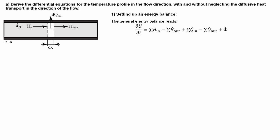But at the same time, some energy is generated due to the volumetric source term. And since the temperature of the fluid is not the same at every position in the pipe, heat can diffuse from the higher temperature region to the lower temperature region. Therefore we have to take into account the diffusive heat fluxes entering and leaving as well.